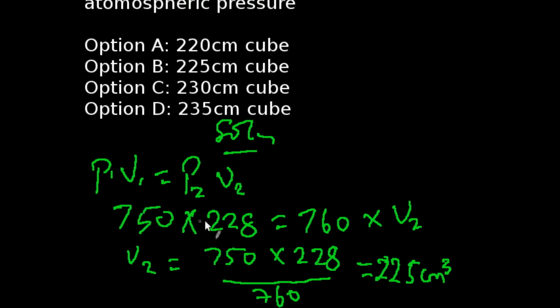So we have our P₁ to be 750 multiplied by 228, and V₁ is equal to 760 times V₂. So our V₂, making it subject of the formula, is going to be 750 times 228 all over 760. That's going to give us 225 cm³. That corresponds to Option B.